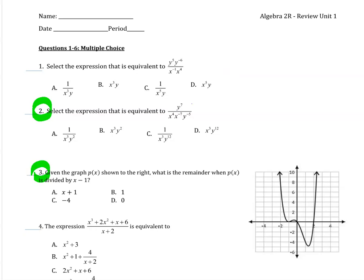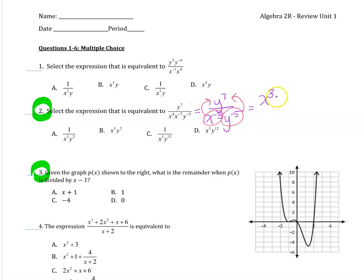Starting right at the beginning with question 2 for exponent rules: the first thing I'm noticing is that I have some x's in the bottom that can be combined. Anytime I'm multiplying numbers with the same base, I can add the exponents — so 4 plus a negative 7 is a negative 3. Negative exponents are like elevators; they just move things up or down. So I can move this y to the negative 5th and x to the negative 3 to the other side of the fraction bar, which changes the exponent to be positive. We get x cubed y to the 12th, and that's your correct answer.